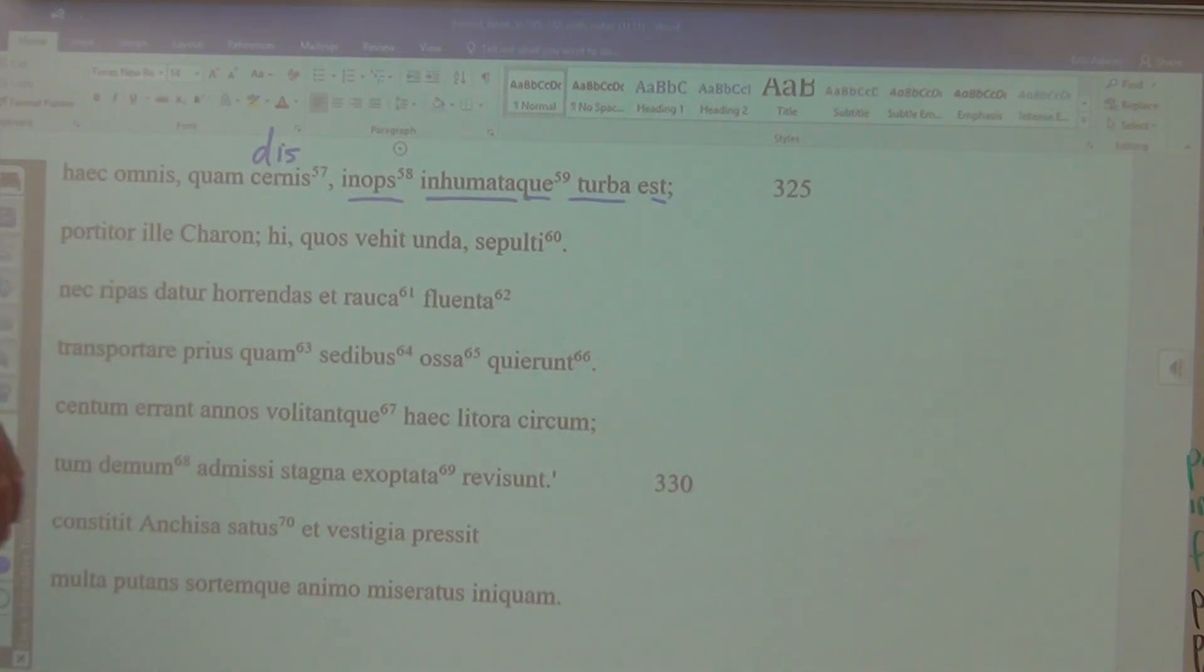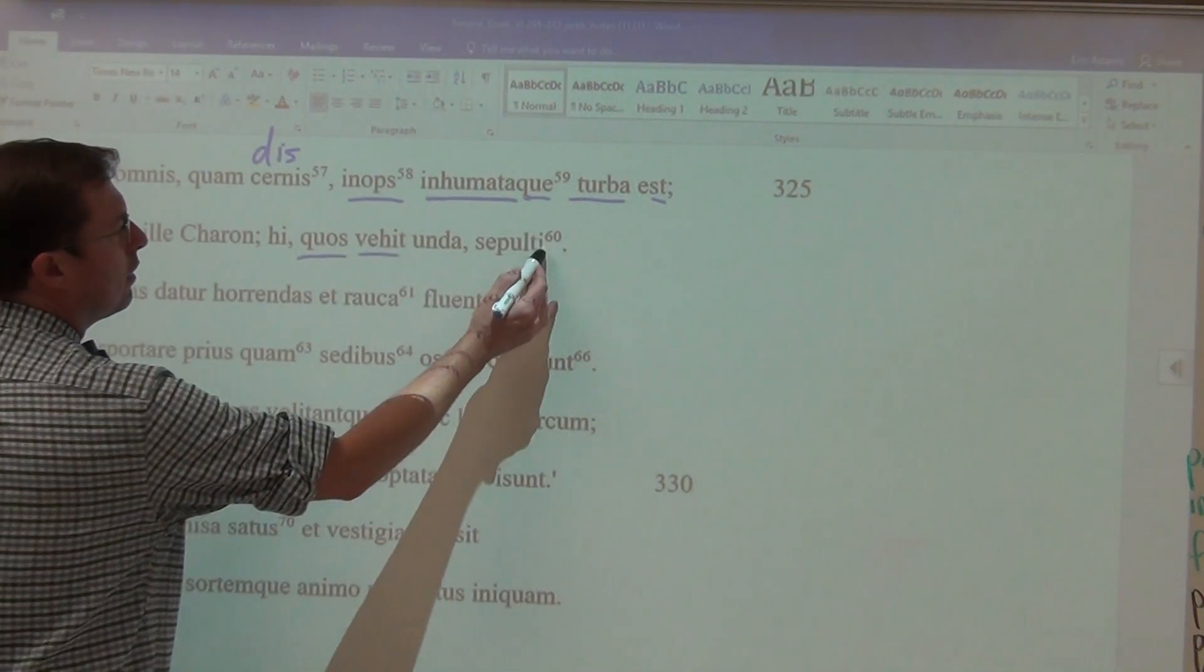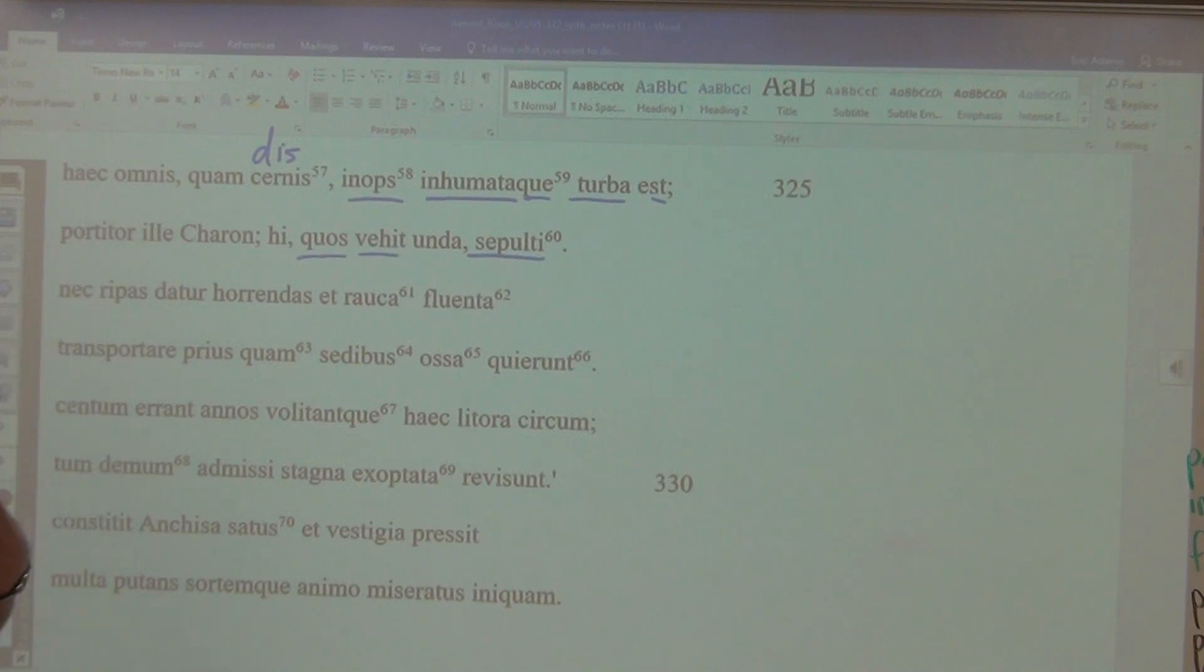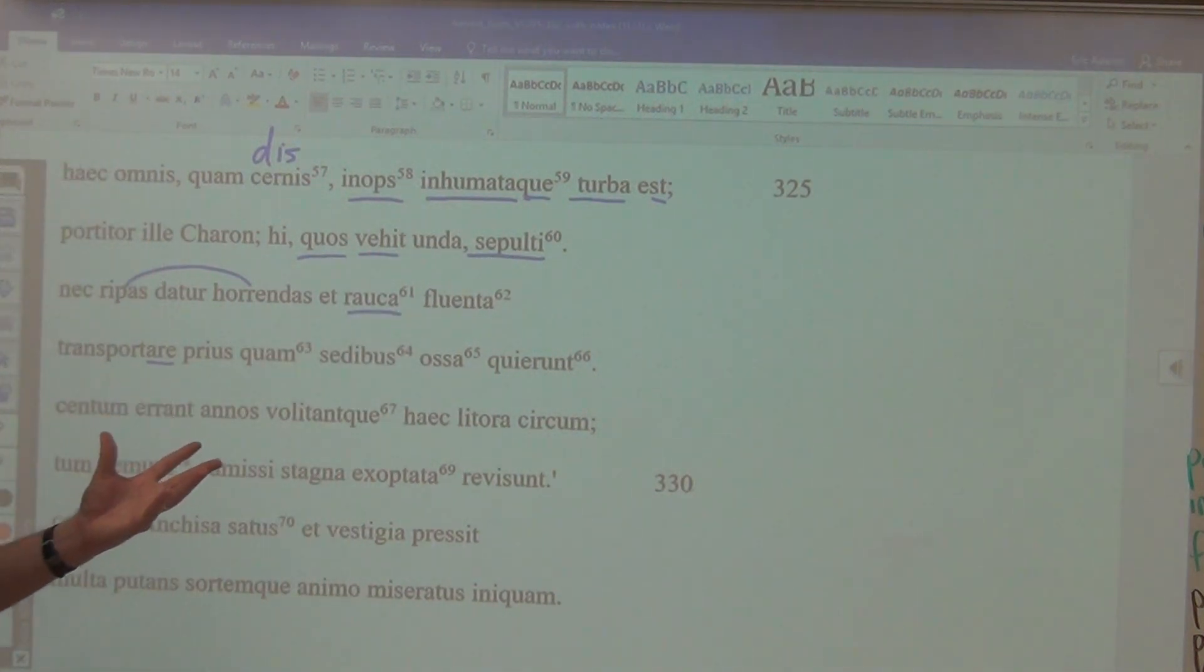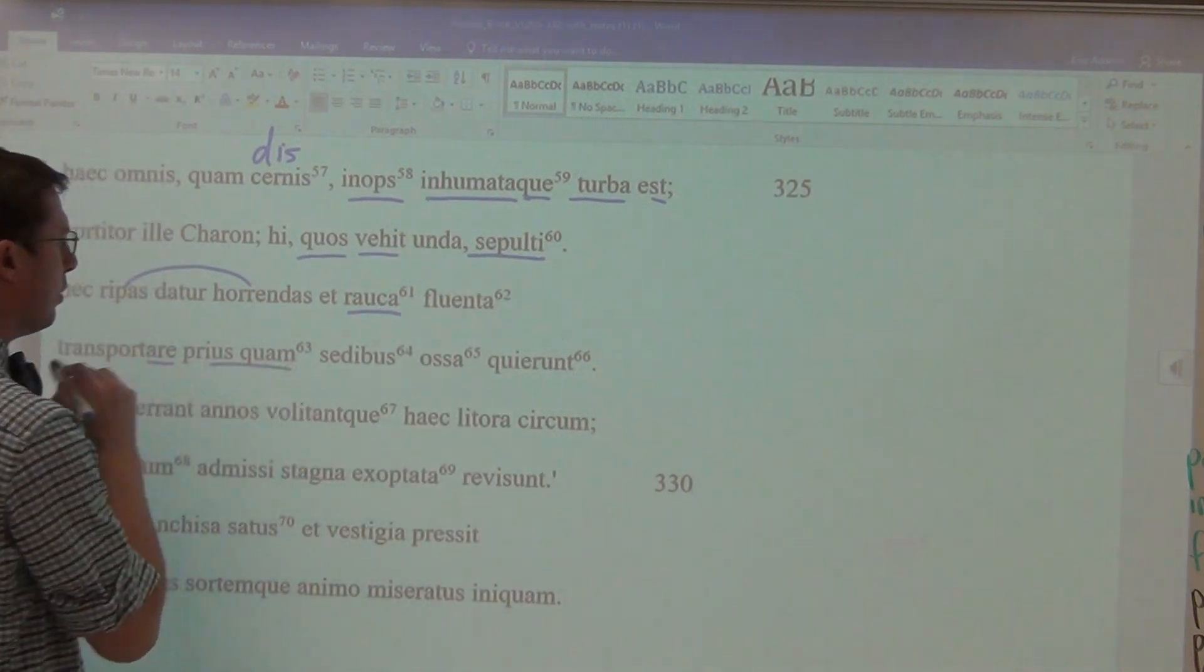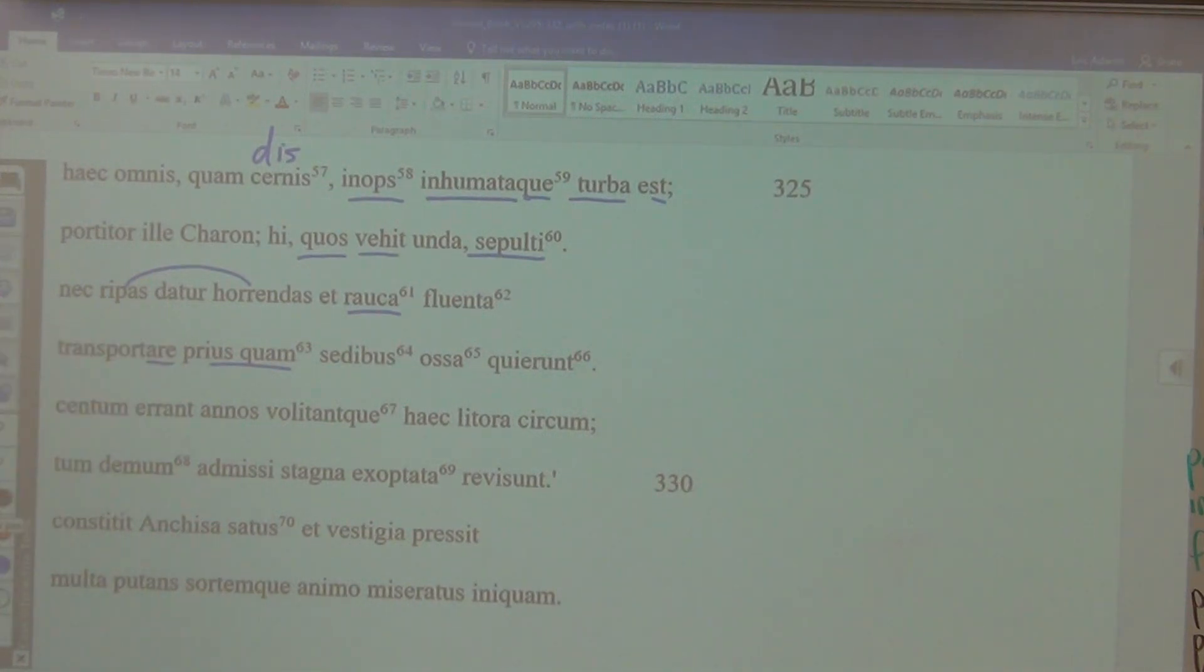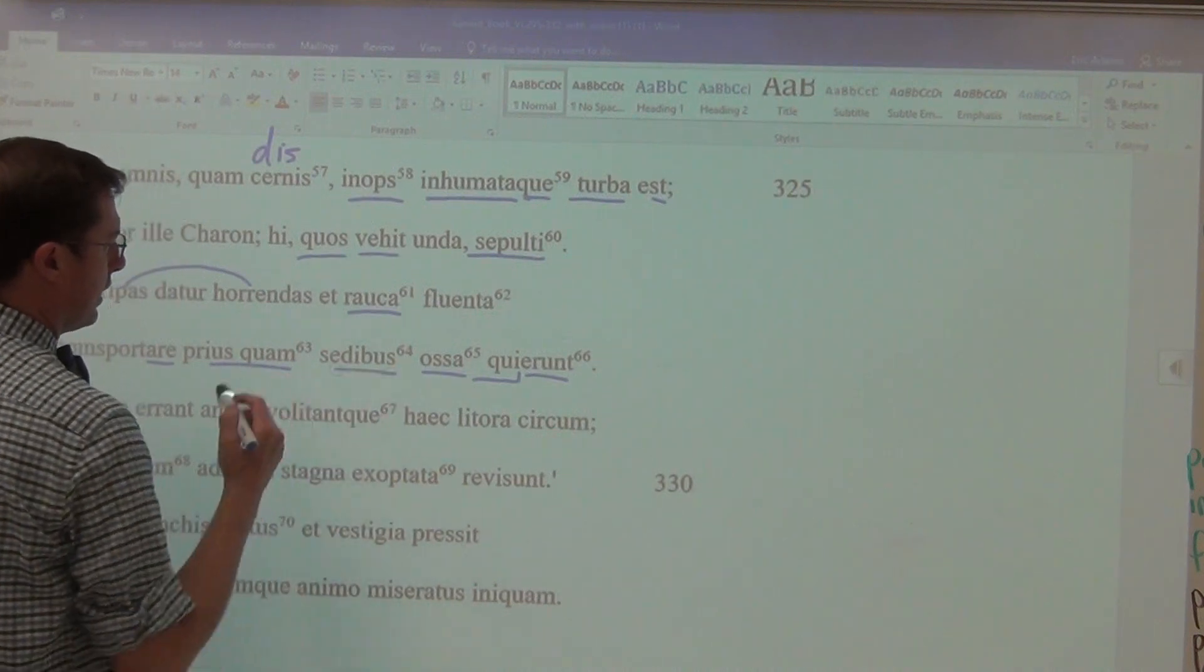That guy is the boatman Charon. And these guys, whom the wave carries, veho vehere, they are implied, these guys, the ones having been buried. Sepelio sepelire sepelivi sepultus. It is not given, it is not granted to carry across the horrendous banks and the raucous flowings, we're going to get the word raucous. So it is not given, it is not granted to carry across the horrendous banks and the raucous flowings before, it's not granted to carry them across those banks, the unburied ones, before their bones have rested in their seats. In other words, they have to be properly buried.